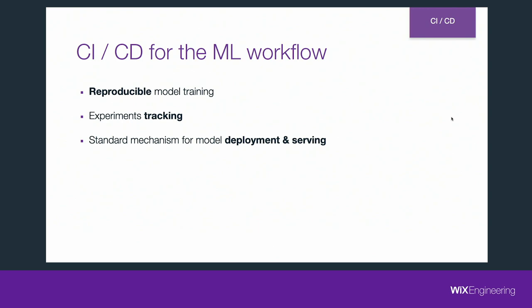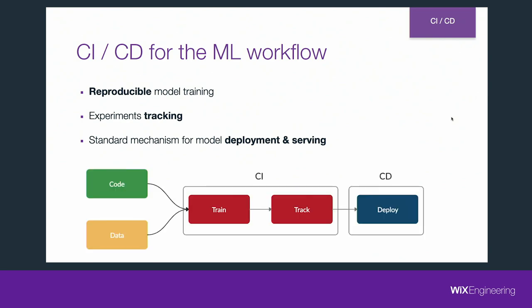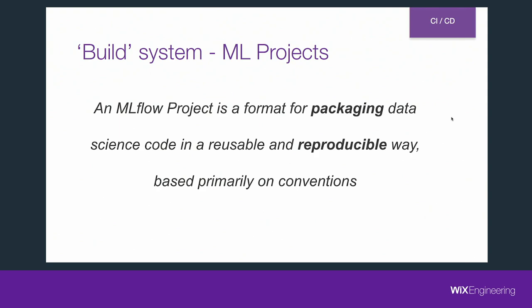And once we orchestrated the training pipeline, we want a standard mechanism for model deployment and serving. We can roughly divide the first two points to CI and the third to CD, continuous delivery. The continuous integration part of our system is covered by MLflow, specifically the MLflow project component, which is defined as a file format for packaging data science code in a reusable and reproducible way, based primarily on conventions. This is what we model our ML build system component on. Let's see how it works.